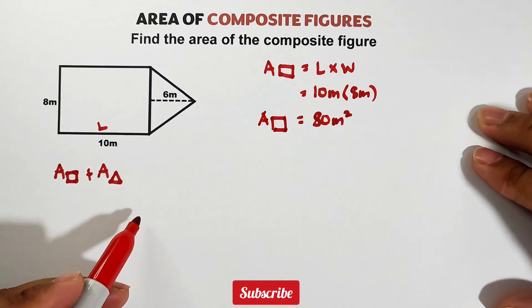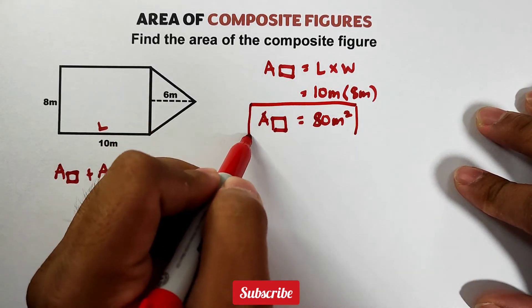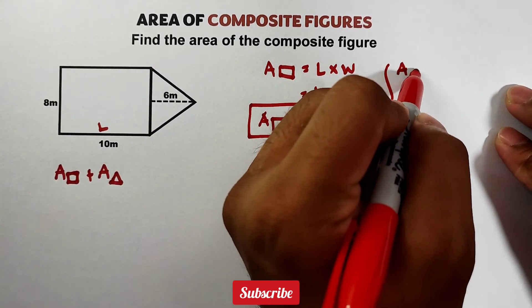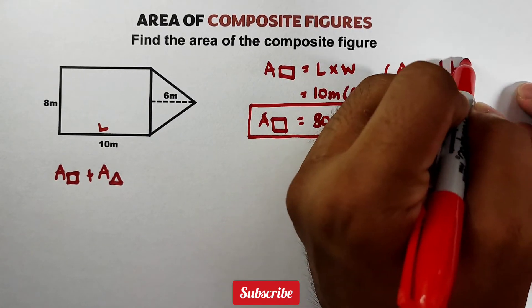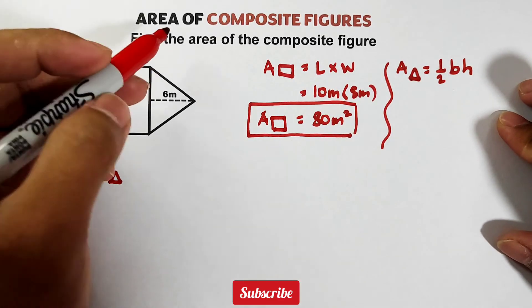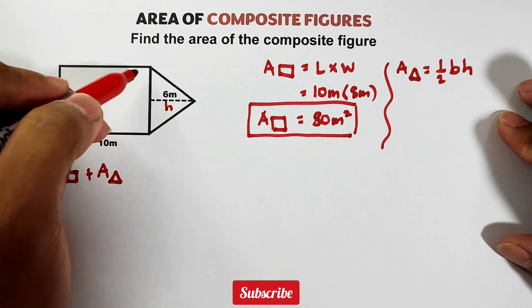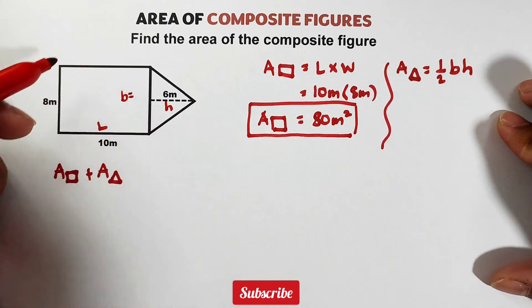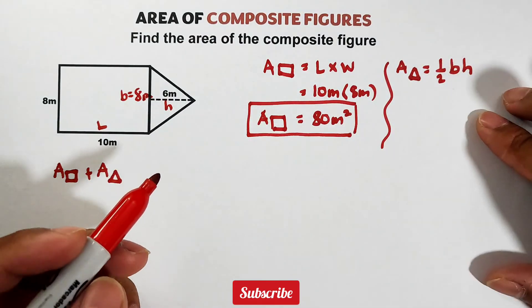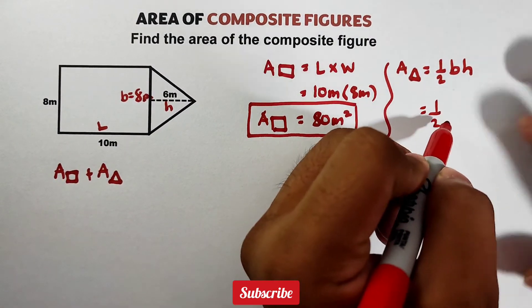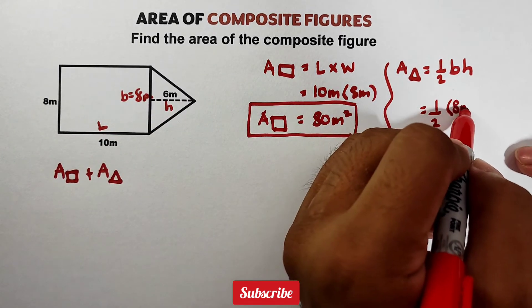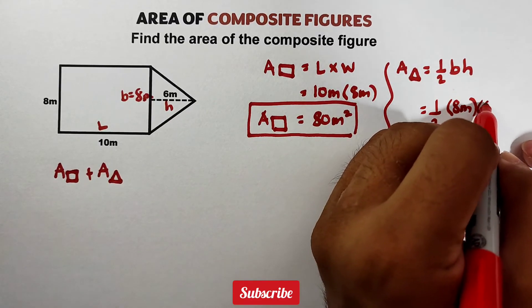So what about the area of the triangle? For the area of the triangle, area of the triangle is equal to one-half base and height. Let's identify which one is the base and the height here. The height is 6. The base is this. But what is the value of your base? Since this one is 8, automatically this one is also 8 meters. So substitute the values. We have one-half times your base, which is 8 meters, times your height, which is 6 meters.